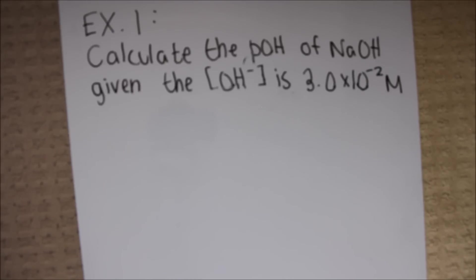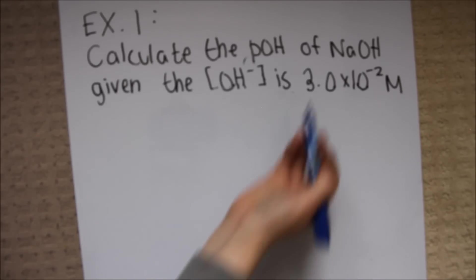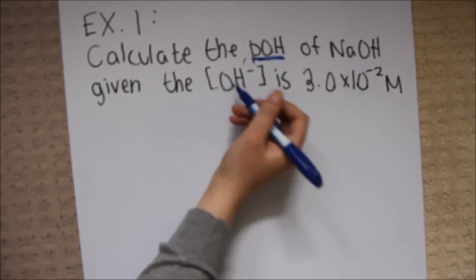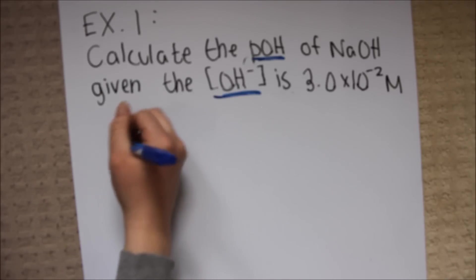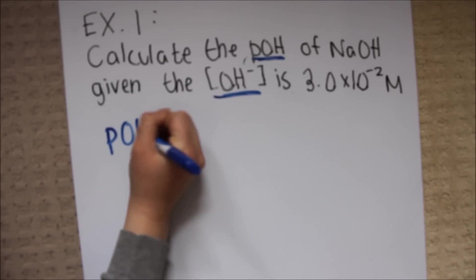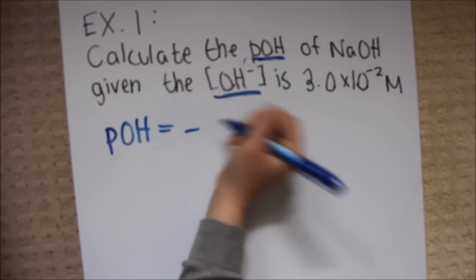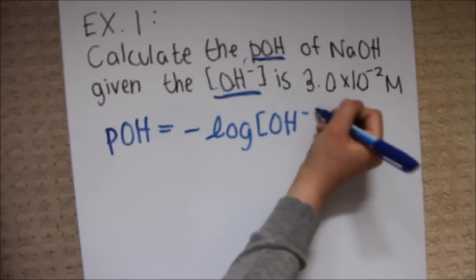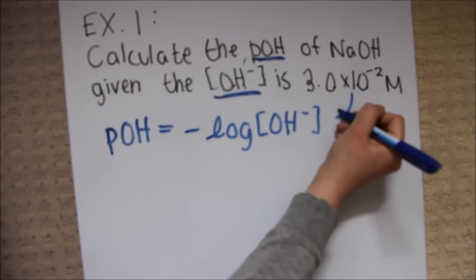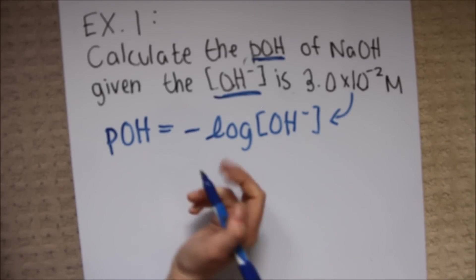Example 1. Calculate the pOH of sodium hydroxide given the hydroxide ion concentration is 3 times 10 to the negative 2 moles per liter. The first thing that we need to recognize in this problem is that we are looking for pOH and we have the value for the OH-. Looking back at my formulas, I can see that the mathematical definition of pOH will give me the answer I desire. Now it's simply a matter of substituting the OH- value into the formula.